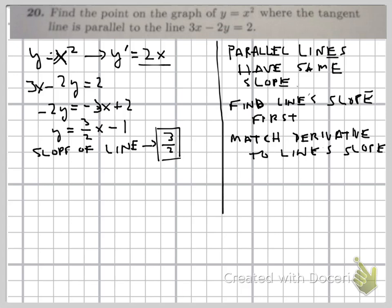As x varies, the 2x value will vary, but the problem wants the point where the tangent line is parallel to this line. So we take 2x, our derivative which is the slope of the tangent line, set that equal to 3 halves. Divide both sides by 2, and you get x equals 3 over 4.